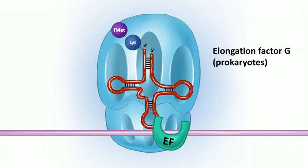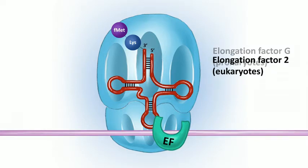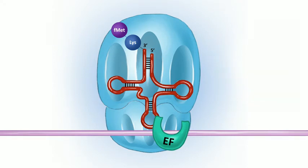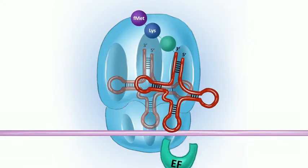Translocation requires elongation factor G in prokaryotes and elongation factor 2 in eukaryotes — make sure you know those. This is clinically important because there are bacterial toxins that work by inhibiting EF2 in host cells: diphtheria toxin and exotoxin A produced by Pseudomonas.